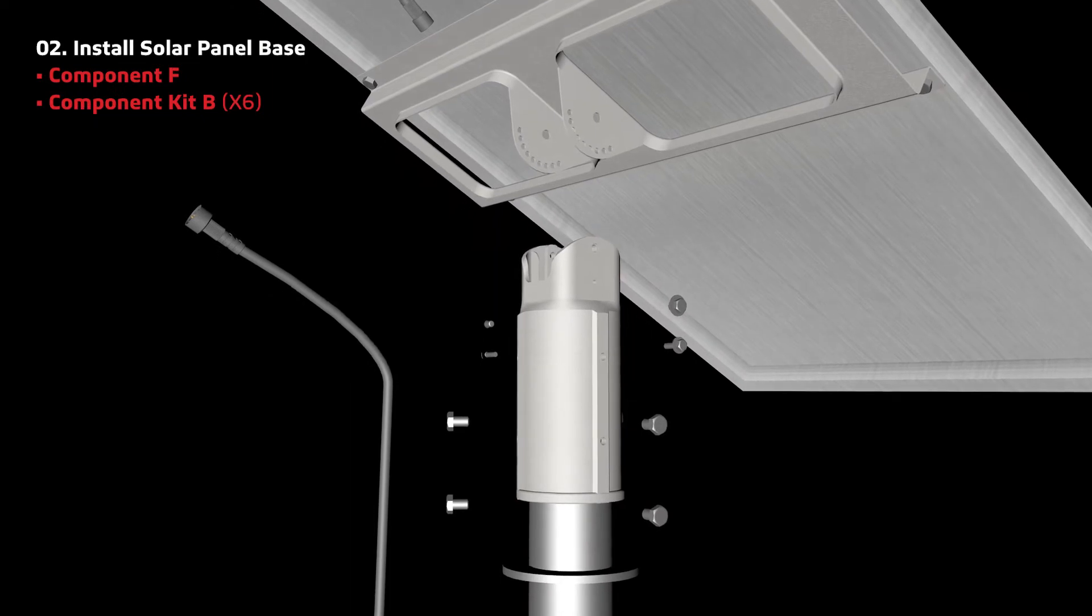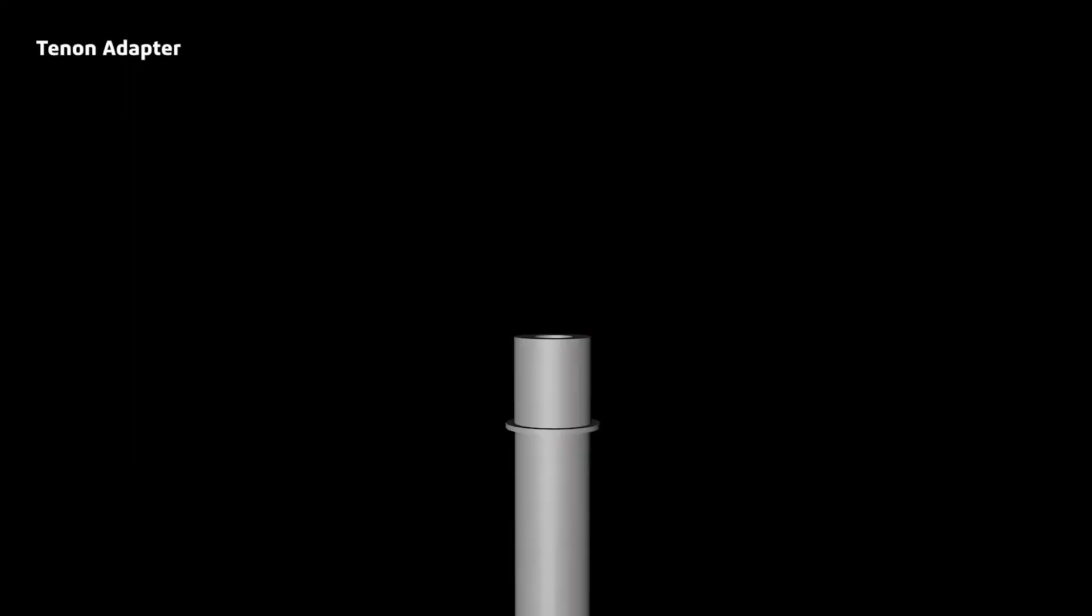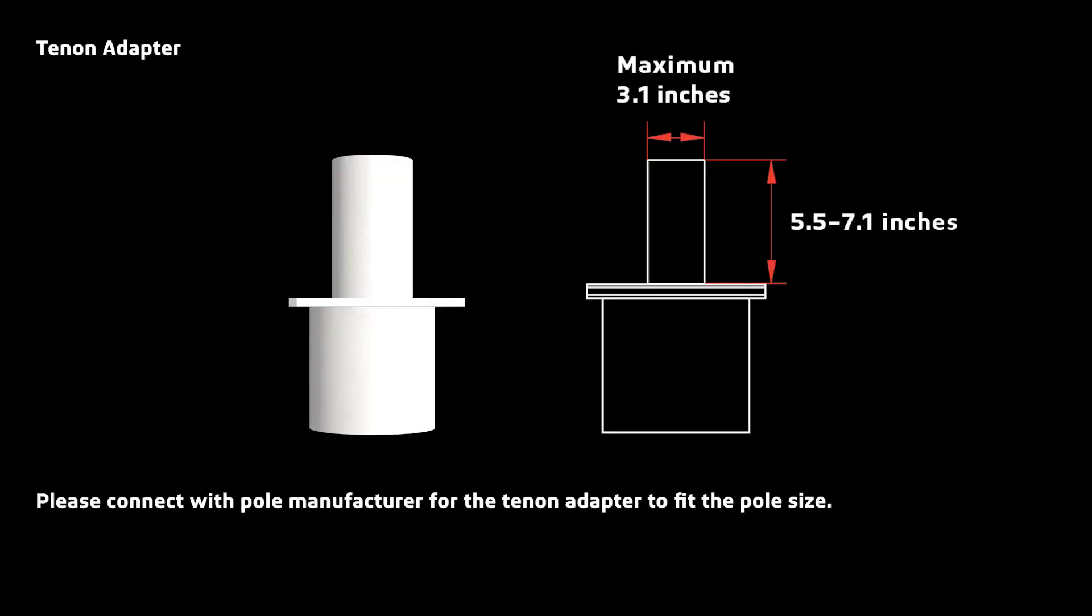Next, secure component F to the pole. If your pole is square or too big for component F, you will need to purchase a tenon adapter. Please contact your pole manufacturer for the tenon adapter. They will provide a tenon adapter that fits your pole. The top of the tenon adapter should be a maximum of 3.1 inches wide and 5.5 to 7.1 inches tall.